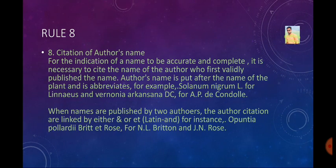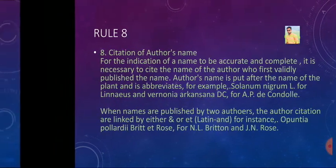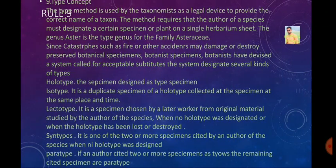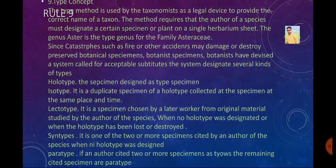Concept of type: the type method is used by taxonomists as the legal device to provide the correct name of a taxon. When an author is working, they must have a specimen, noting when it was collected and when it arrived at the herbarium. This is important because catastrophes can occur and stored specimen material can be damaged.